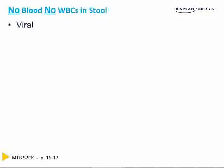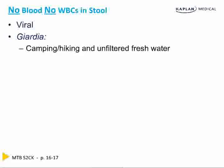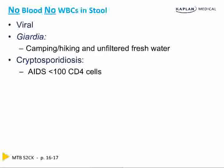How do we diagnose diarrhea when there's no blood and no white cells in the stool? It could be viral or Giardia. For Giardia, look for a person camping or hiking who drank unfiltered fresh water. Cryptosporidiosis occurs almost exclusively in HIV patients with advanced disease. The test is a modified acid-fast stain — the most common wrong answer is expecting to see it on the ova and parasite exam; you cannot.